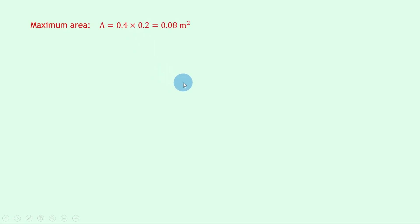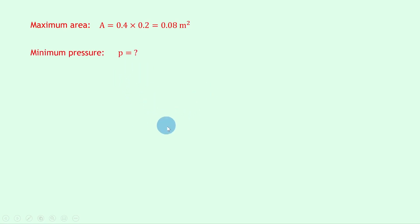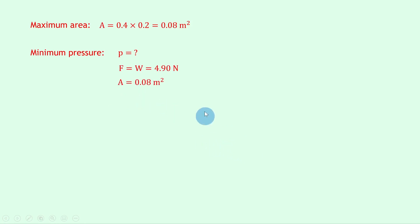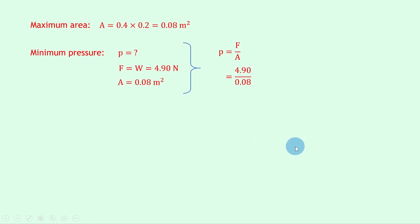The maximum area is a equals 0.4 times 0.2, which equals 0.08 meters squared. To calculate the minimum pressure: the force is given by the weight, which is 4.90 newtons, and the area is 0.08 meters squared. Writing down p equals f over a and substituting in gives 4.90 divided by 0.08, which gives a final answer of 61 pascals.